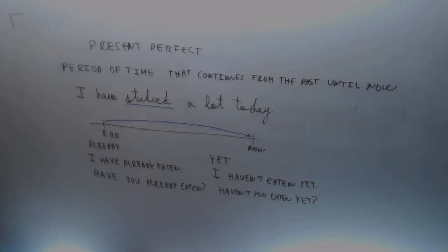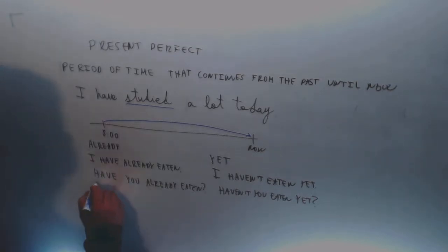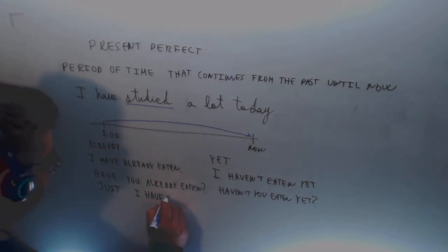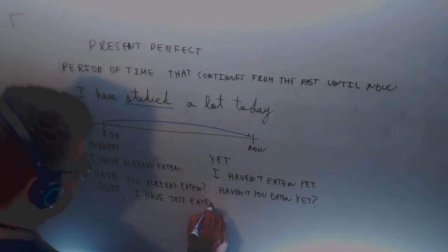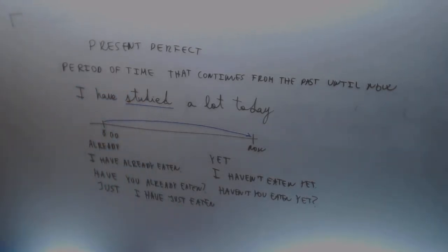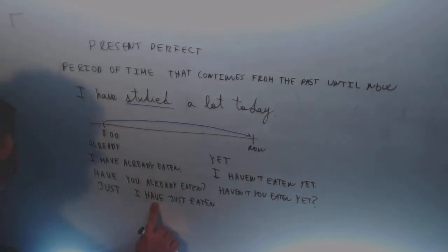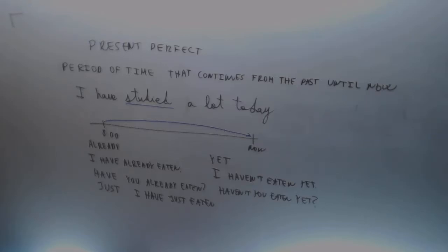And 'just' - what do you mean with just? When you say 'I have just eaten,' it means you just finished eating. That only goes in affirmative. 'I have already eaten' means you ate, maybe half an hour ago. But if you say 'I have just eaten,' it means you just swallowed the last bite.